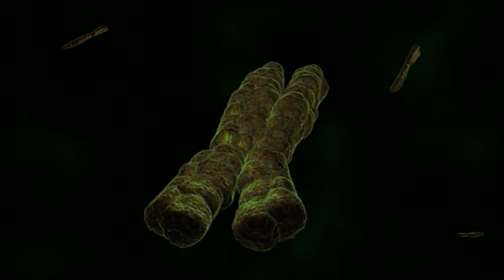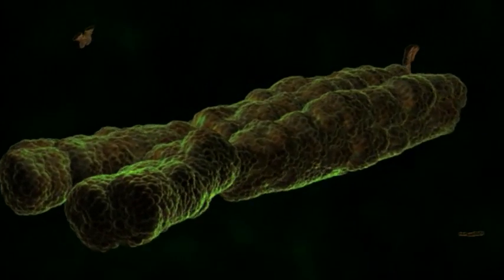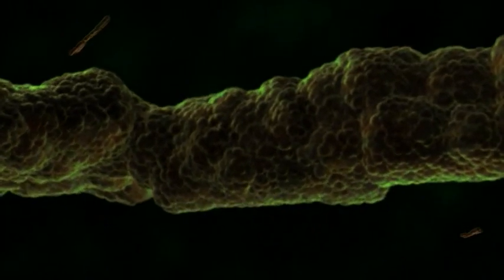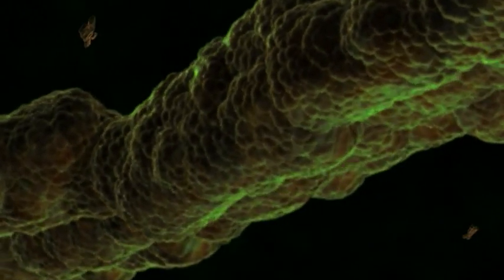This is the nucleus. Penetrating the nucleus wall, we encounter 23 pairs of DNA molecules. These are your chromosomes.